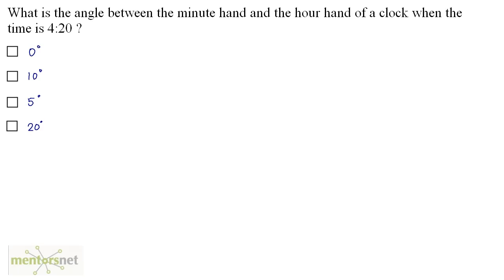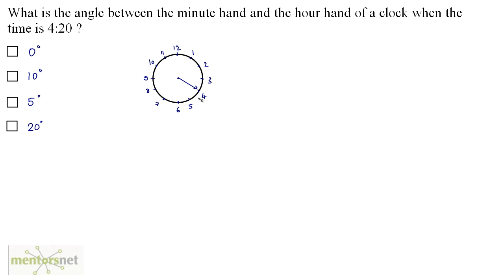What is the angle between the minute hand and the hour hand of a clock when the time is 4:20? Many people will mark the answer as 0 degrees because they think both the hour hand and the minute hand point to 4, but that is not the case. While the minute hand moves for 20 minutes, the hour hand also gets pushed forward. So approximately this will be the position of the hour hand and we'll have to calculate this angle.